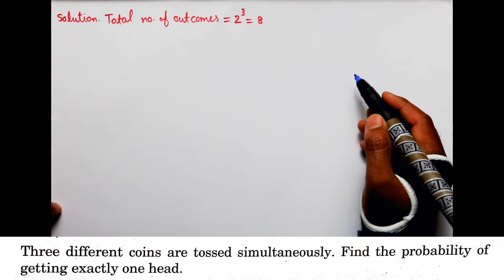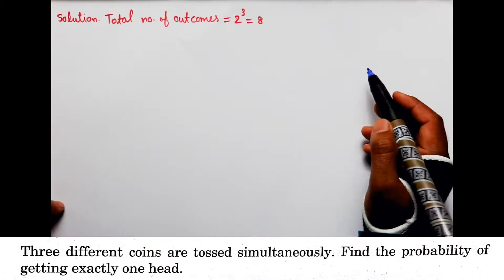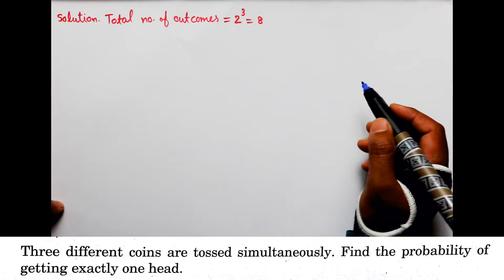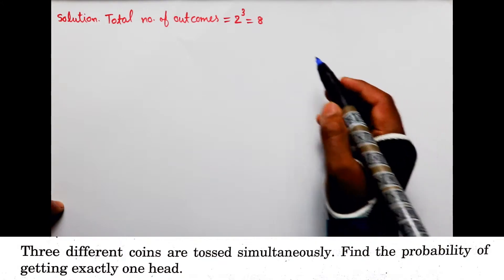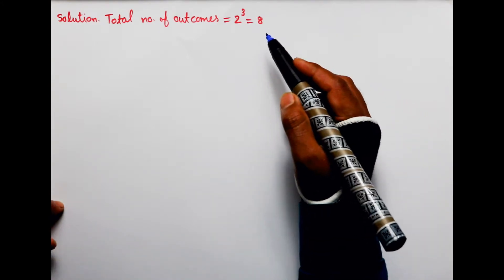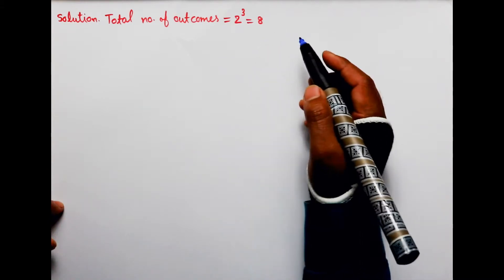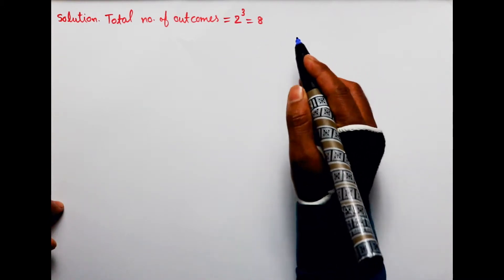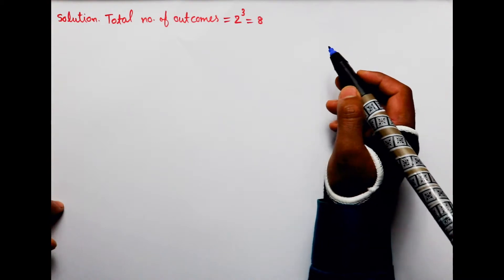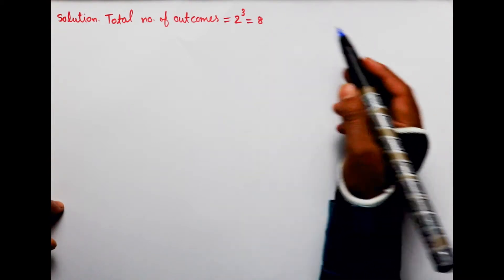अब पता कर लेते हैं कि outcomes कौन कौन से हो सकते हैं। 8 outcomes आएंगे जब हम three coins को toss करेंगे। किसी भी coin को toss करते हैं तो या तो head आएगा या tail आएगा — एक coin में दो outcomes आ सकते हैं। तो head और tail आ सकते हैं।